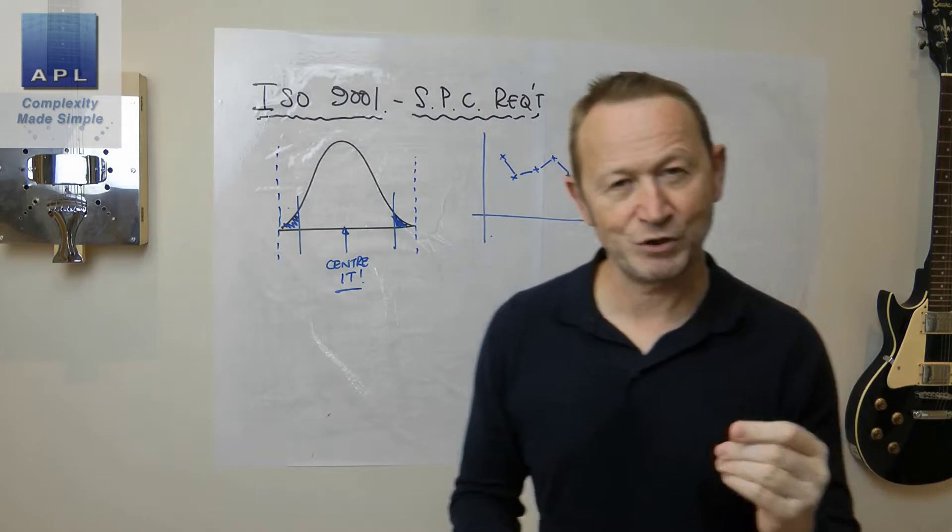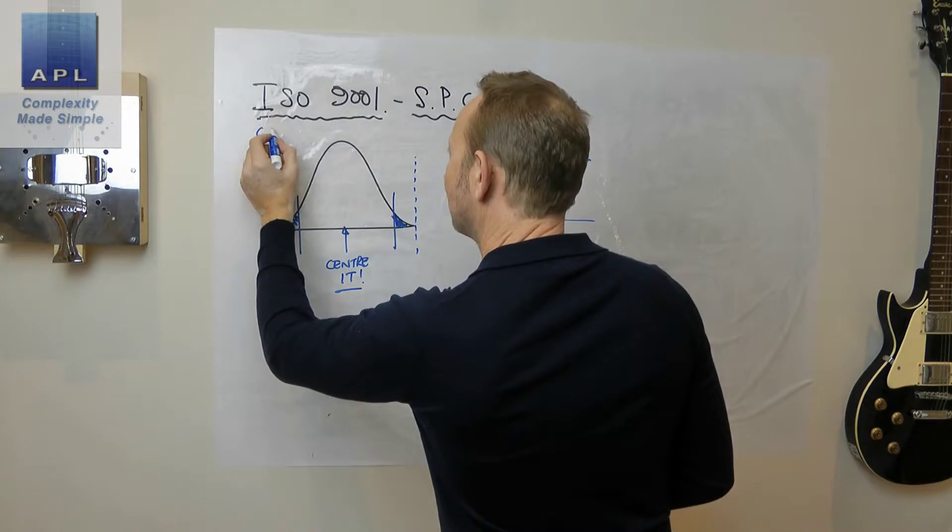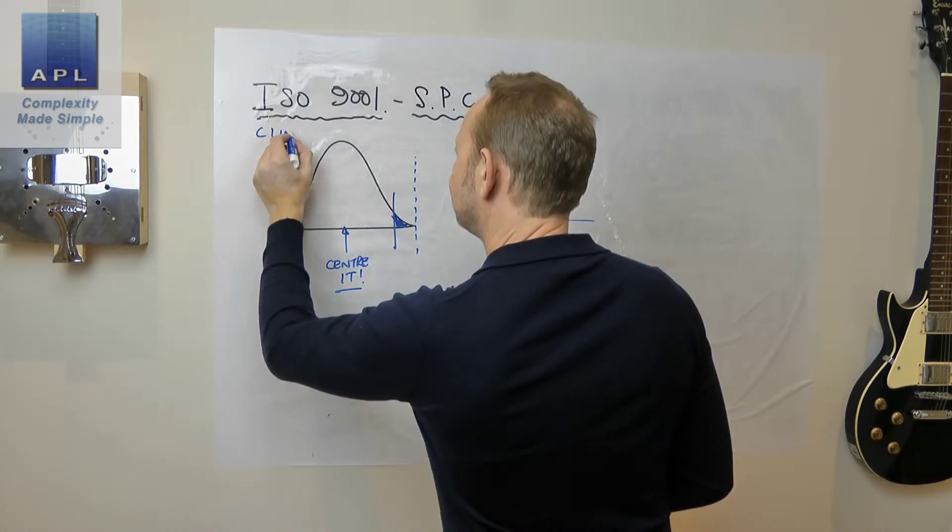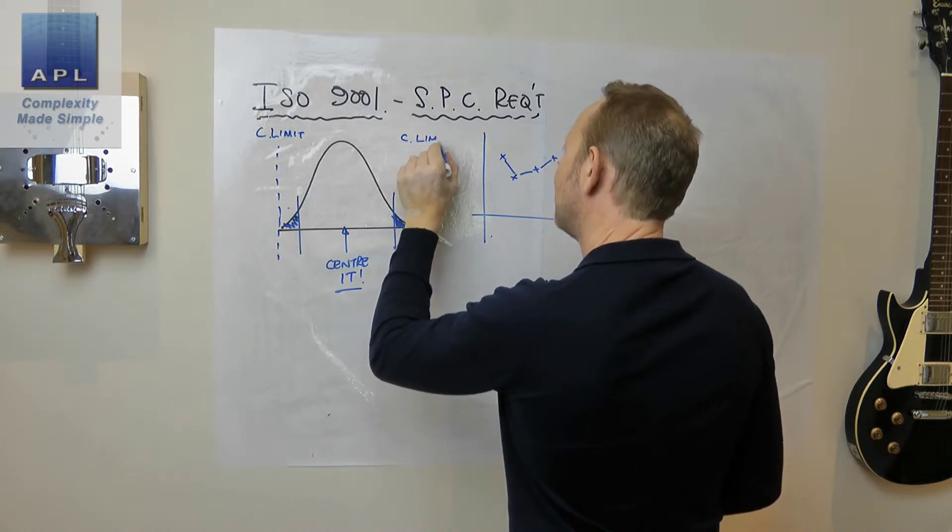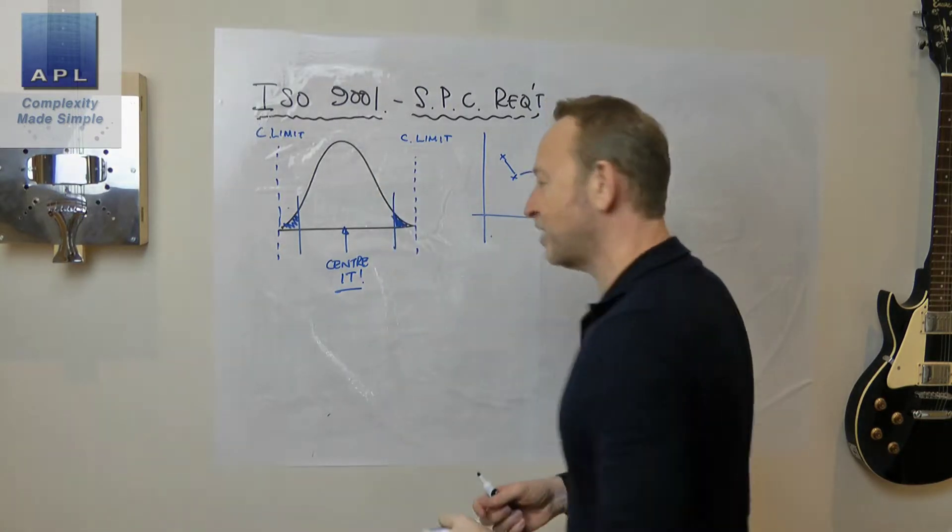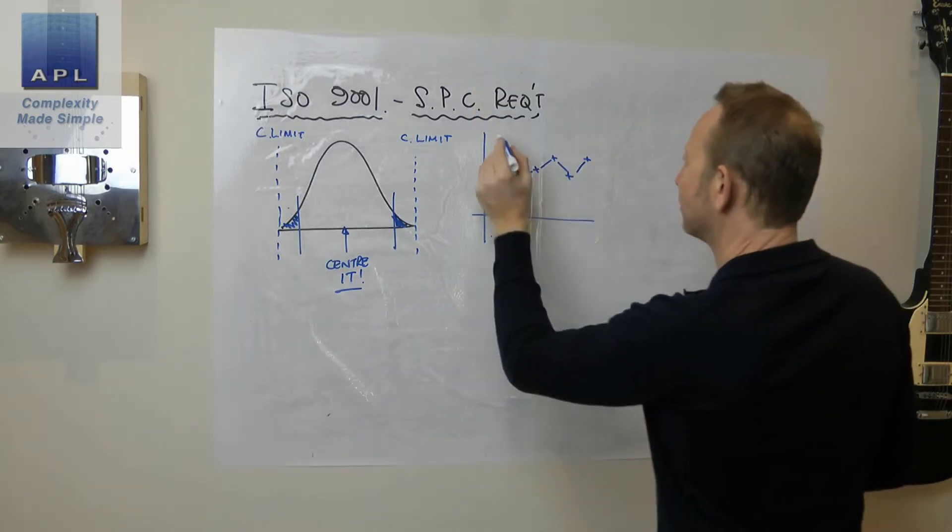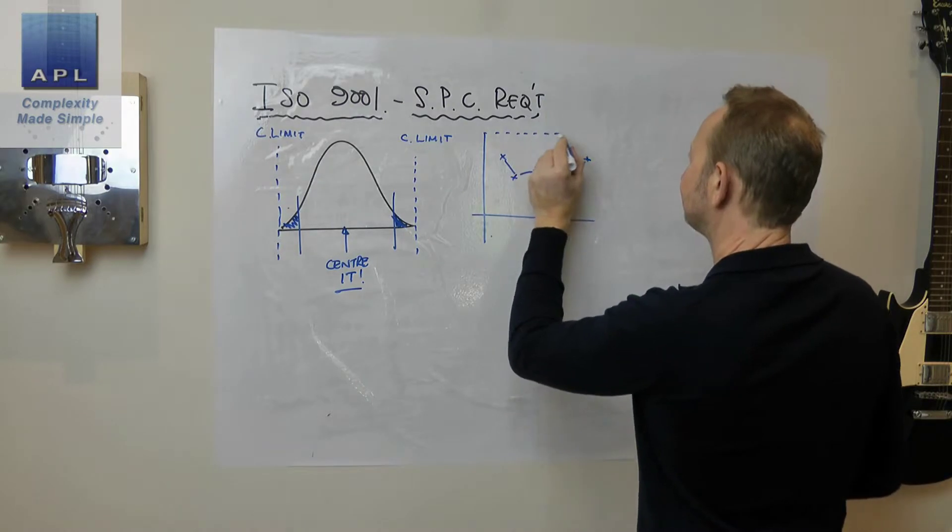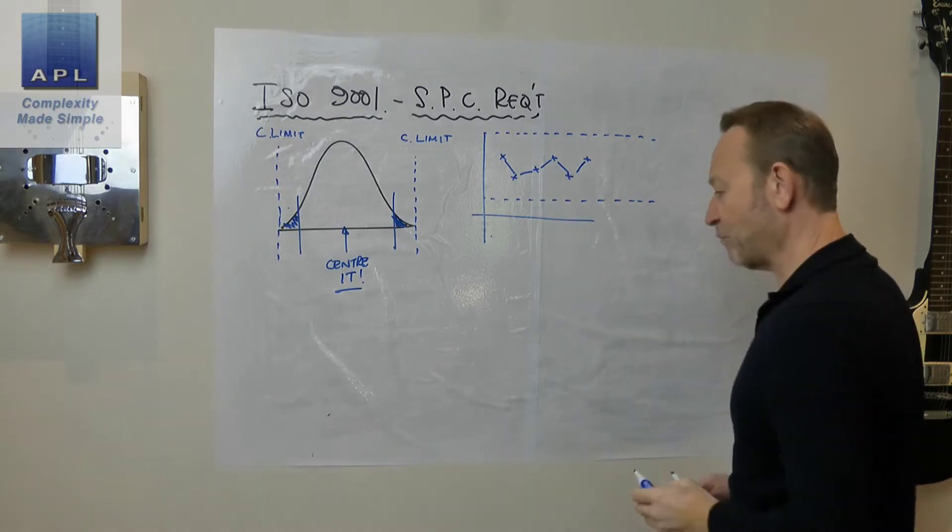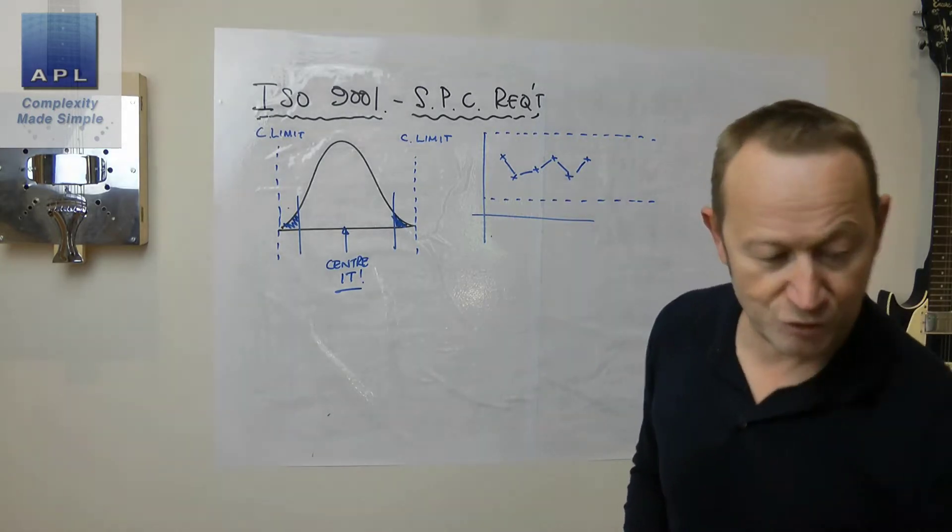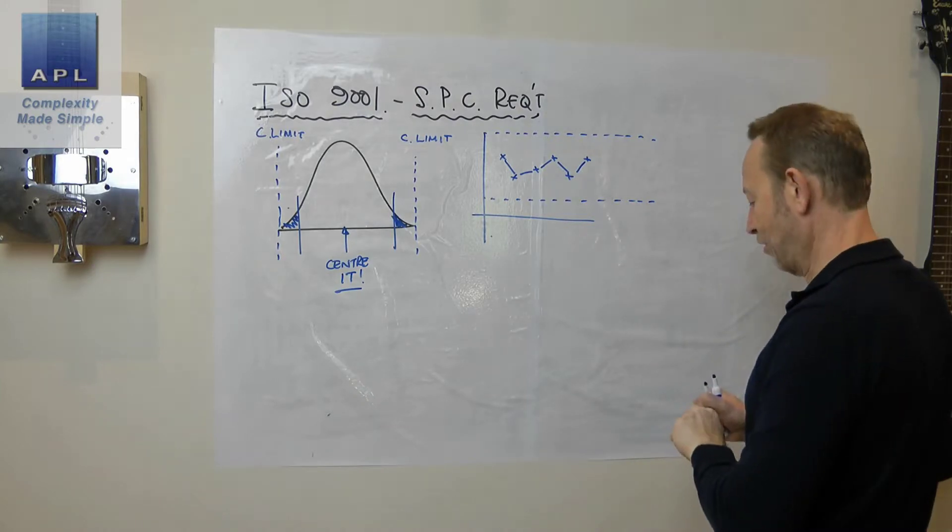So it actually communicates the tips of the distribution. That's what the control limits will be. A control limit - lower control limits, upper control limit - actually tries to represent the tips of the distribution. So the control limits on this thing represent the tips of the distribution.